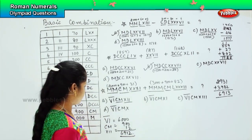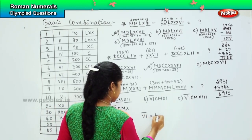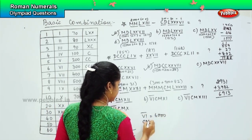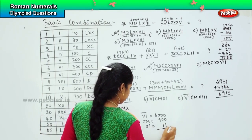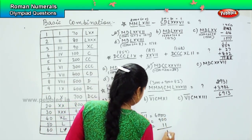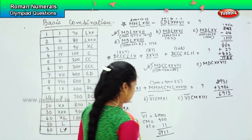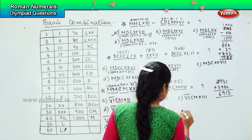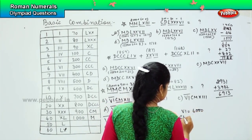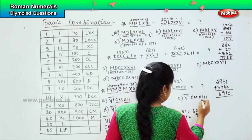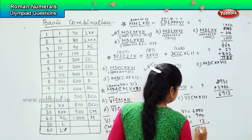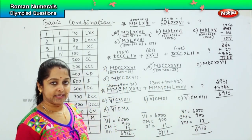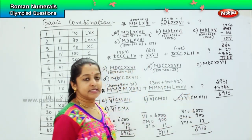The first option gives 6912 — that is not the right option. Next: VI is 6000, CM is 900, and XI is 11, so 6911. The next: VI is 6000, CM is 900, and XII is 13, so 6913. Is this the option? Yes. So option C is the right answer.